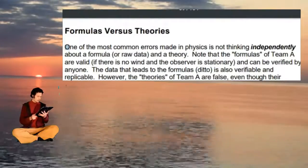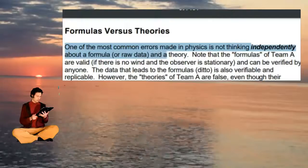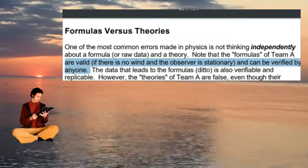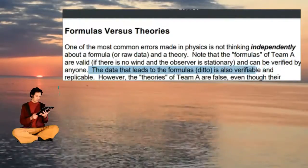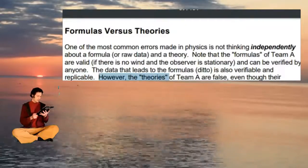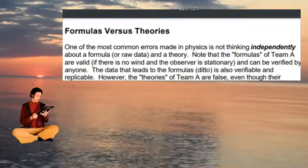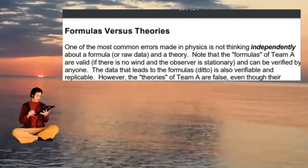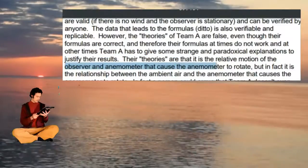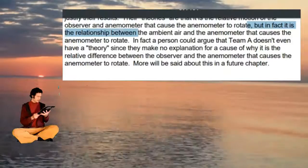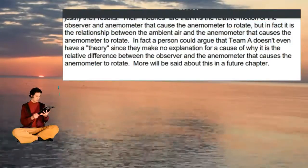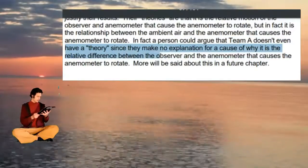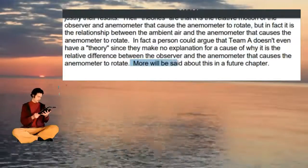Formulas versus theories. One of the most common errors made in physics is not thinking independently about a formula or data and a theory. The formulas of Team A are valid if there is no wind and the observer is stationary, and can be verified by anyone. However, the theories of Team A are false even though their formulas are sometimes correct, and therefore their formulas at times do not work — and at other times Team A has to give strange paradoxical explanations to justify their results. Their theory is that it is the relative motion of the observer and anemometer that causes the anemometer to rotate, but in fact it is the relationship between the ambient air and the anemometer that causes it to rotate. One could argue that Team A doesn't even have a theory, since they make no explanation for the cause. More will be said about this in a future chapter.